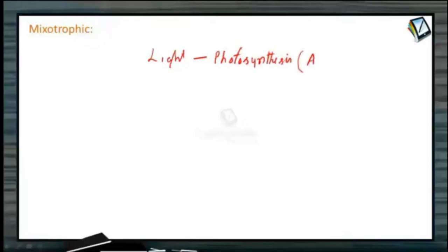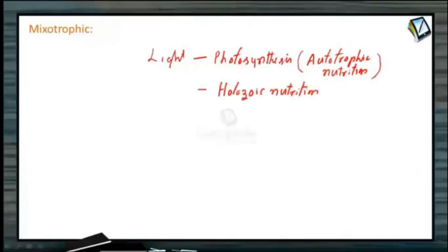Mixotrophic nutrition. In Euglena, during daytime when there is light, it performs photosynthesis, which is called autotrophic nutrition. Otherwise, it can perform holozoic nutrition also. So Euglena is able to perform both autotrophic as well as holozoic nutrition. That is why it is called mixotrophic nutrition.